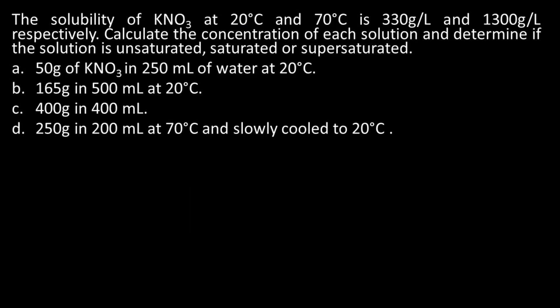For example, the solubility of KNO₃ at 20 degrees Celsius is 330 grams per liter. The concentration can be 250 grams per liter, 167 grams per liter, 400 grams per liter, or even 330 grams per liter. Concentration tells you exactly how many grams of solute is dissolved per liter. Solubility tells you the most you can dissolve per liter at a given temperature — that is what solubility is.